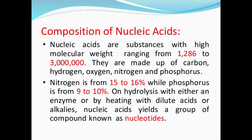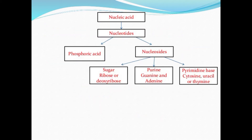The composition of nucleic acids: nucleic acids are substances with high molecular weight ranging from 1,286 to 3,000,000. They are made up of carbon, hydrogen, oxygen, nitrogen, and phosphorus. Nitrogen constitutes 50–60% and phosphorus 9–10%. On hydrolysis with an enzyme or by heating with dilute acid or alkali, nucleic acids yield a group of component compounds known as nucleotides.